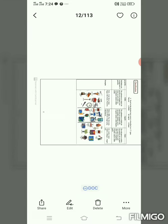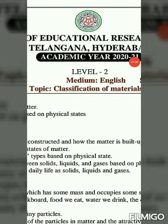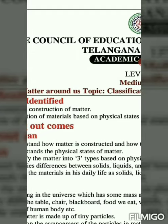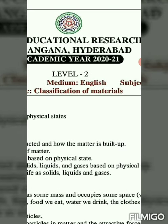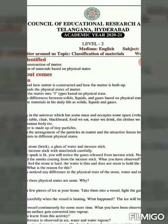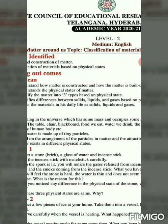Children, now this is Worksheet 1. The chapter name is 'Matter Around Us' and the topic is classification of materials. First you have to know about what is matter. Matter is nothing but an object or substance that has a certain mass and that can occupy some volume.